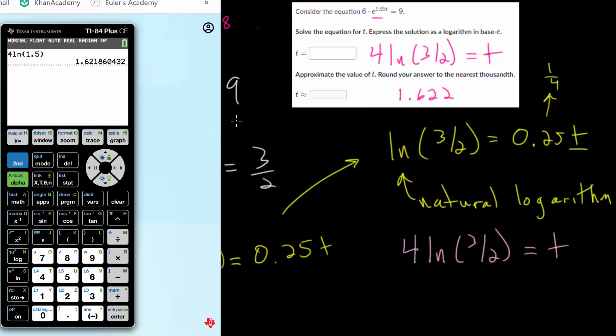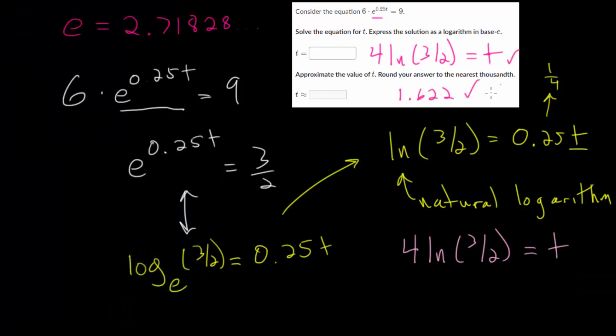And we can even very quickly check this. So let's type in our 4 natural log of 1.5. We'll store that as our variable. And then we'll go back to our original equation. We had 6. Here's an E to the X button or E to anything button. So 6E to the 0.25 times by our variable. And now we need our equal sign. So we'll test that. Second test equals. And 9. And we should get back 1. And since we got back a 1, now we can feel completely confident that this is, in fact, the right solution here.